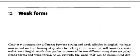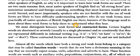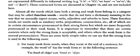Next is unit 12: weak forms. Weak forms and strong forms are quite similar to what we discussed before about schwa — weak syllables versus strong syllables. We also need to discuss contracted forms: shortened versions like 'it is' becoming 'it's', 'are not' becoming 'aren't', 'do not' becoming 'don't'. When forms are shortened, they become weaker.